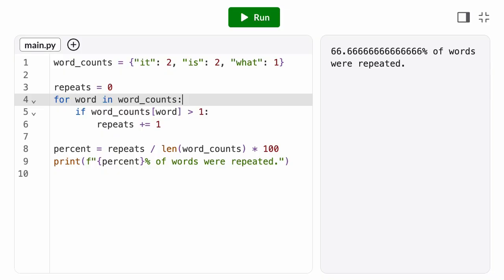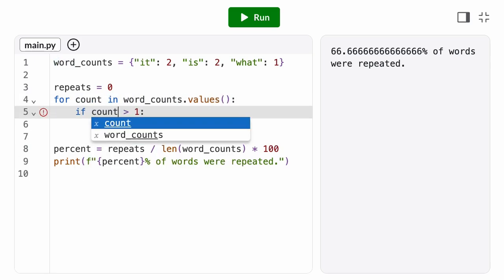So, back to our program, we can change it to iterate by value. We call the values method on our dictionary. And then we update our loop variable, since now it represents the next value in the dictionary.